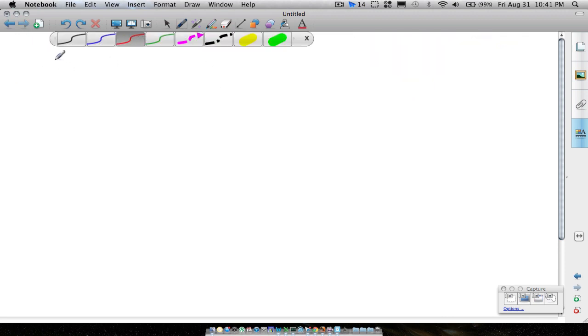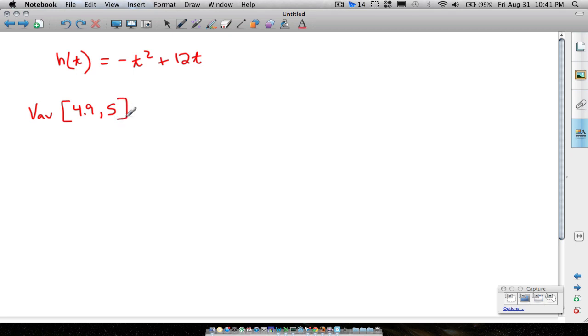Again, our function was h of t, what was it, is equal to negative t squared plus 12t. And let's find an average velocity from, let's say, something really close to five. Let's say 4.9 to five. That's virtually, that's a tenth of a second. You know, snap your finger. Snapping your fingers longer than a tenth of a second probably.